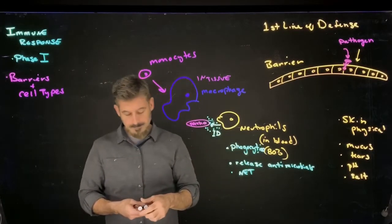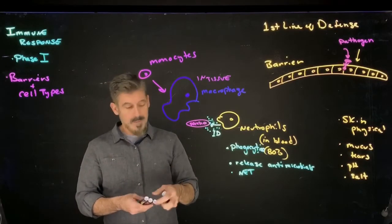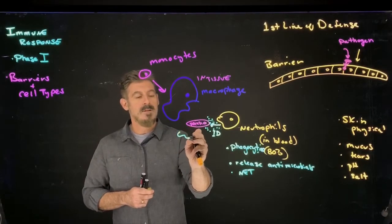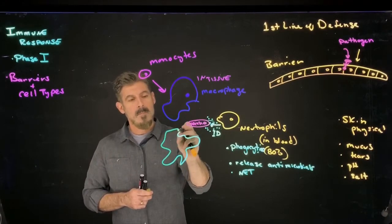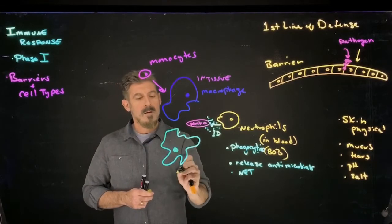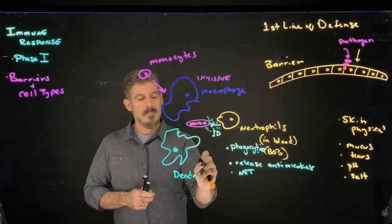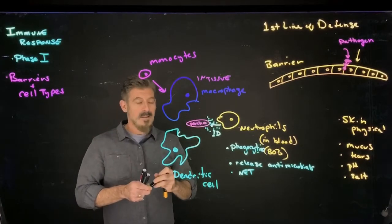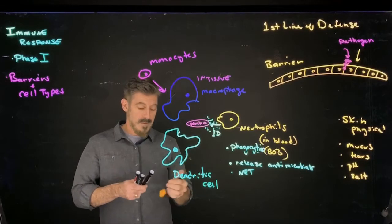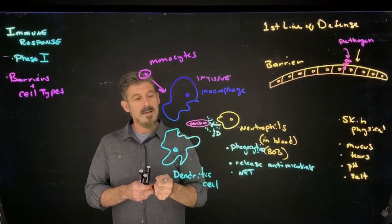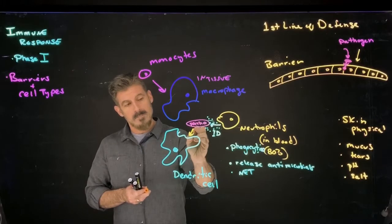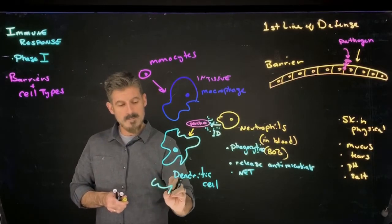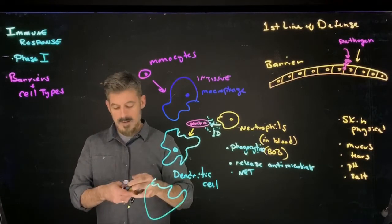Another possibility is that we have a cell which will lead into some of our other types here, called a dendritic cell. The dendritic cell is a little bit different in that what's going to happen here is, while the same sort of thing can occur, the dendritic cell can eat, phagocytize the pathogen.